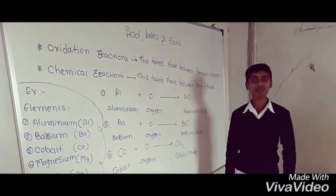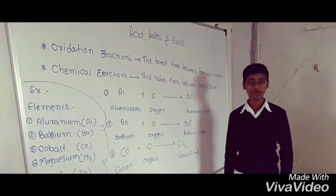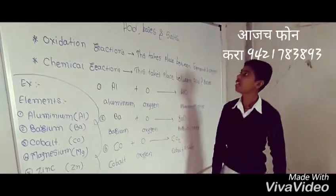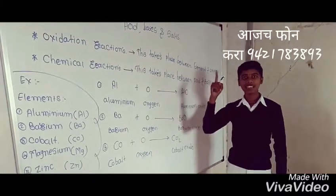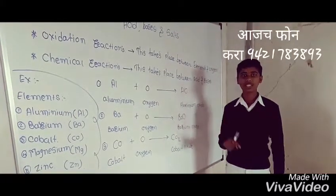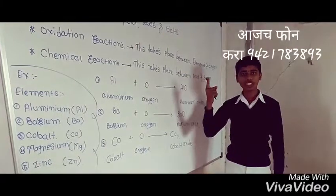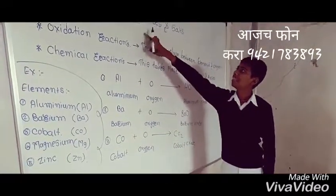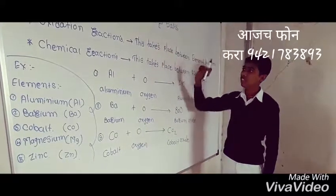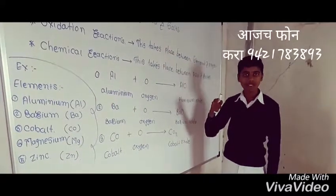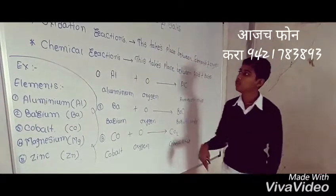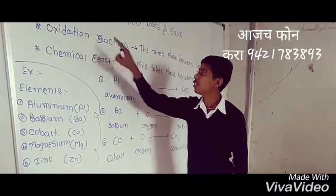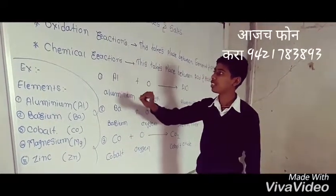My friends, today we will learn science subjects. This science subject is very important for all students in the future. So today we will learn acids, bases and salts. In this chapter there are two types of reactions: oxidation reaction and chemical reaction.